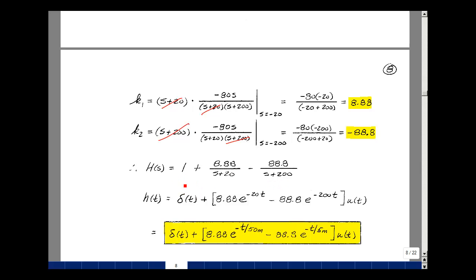Going back to our table in Chapter 9, I'll take the inverse Laplace transform. This will be our unit impulse function, then 8.88 times e to the minus 20t, then minus 88.8 times e to the minus 200t times u(t). Writing this as the reciprocal, 1 over 20 equals 50 milli, and 1 over 200 equals 5 milli. I got this expressed in terms of time constants.